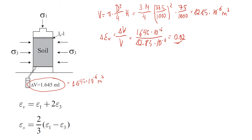Now we find the axial strain. Axial strain epsilon 1 is defined as change in height divided by total height, which is (l0 minus l1) divided by l. We don't need to convert to meters since it's a ratio, so using millimeters: change in height is 3 and initial height is 75, giving us approximately 0.04.